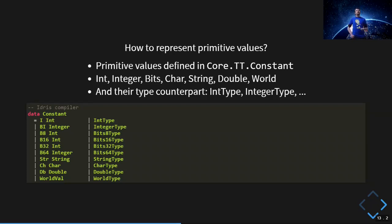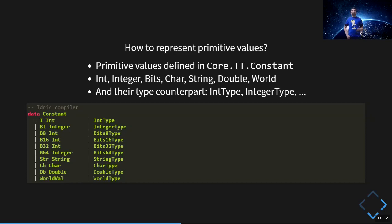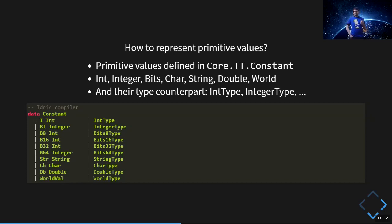Primitive values in the Idris backend are defined in Core.TT.Constant. These aren't surprising: integer representations, bit representations, strings, and doubles. There's also the World value for sequencing IO computations. The surprising part is that we also enumerate types here as primitive constant values — because Idris is a dependent type language, types are values. We need this because Idris can pattern match on types, so if you lack the capability to do a case expression on a type value in the IR, you cannot compile that code.